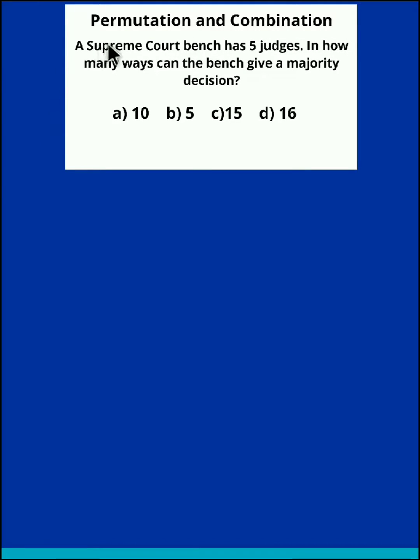Hello and welcome back. We now discuss an example from permutation and combination. The question is: A Supreme Court bench has five judges. In how many ways can the bench give a majority decision? Now, out of five, if three judges agree, then we could say there would be a majority decision. Similarly, if four out of five judges agree,